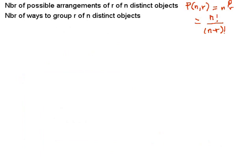In the last video, we saw how to calculate the number of ways to arrange r of n distinct objects. The formulas were given here. These were called permutations.